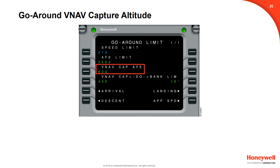The VNAV capture altitude in feet above field elevation for a two-engine go-around is displayed on line 3. At this altitude, the FMA will switch to flight level change and target the climb speed limit, such as 250 knots below 10,000 feet. Pilot entry is permitted. Deleting the go-around VNAV capture altitude sets the height to the default value defined by the aircraft personality module.